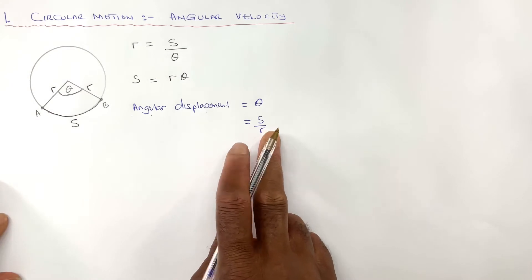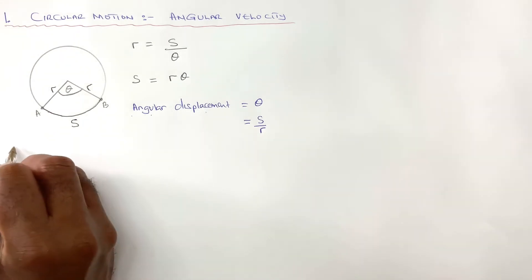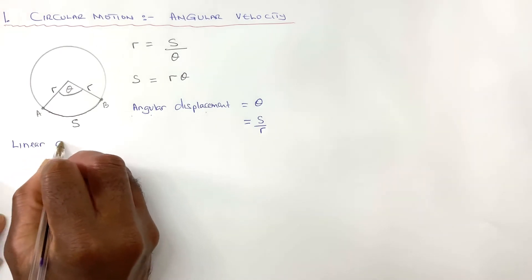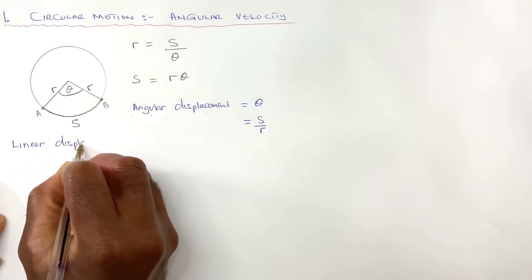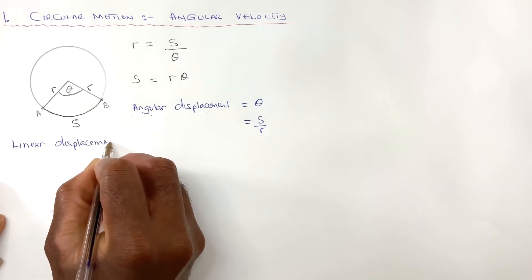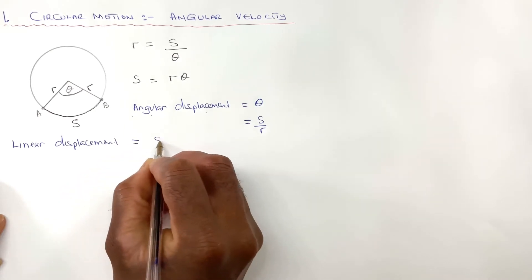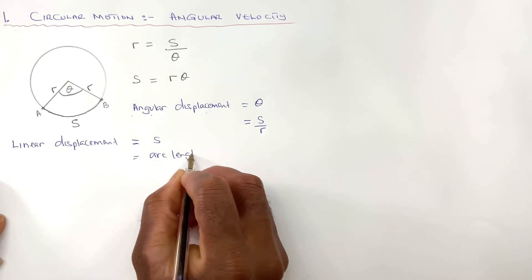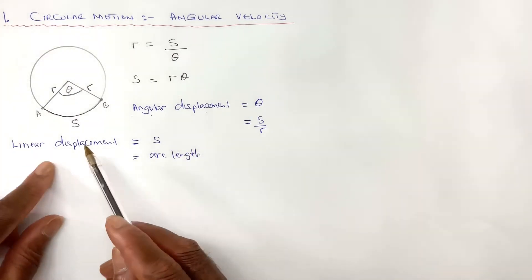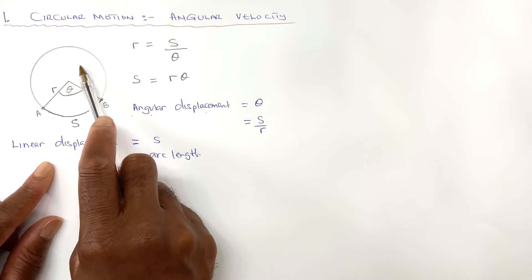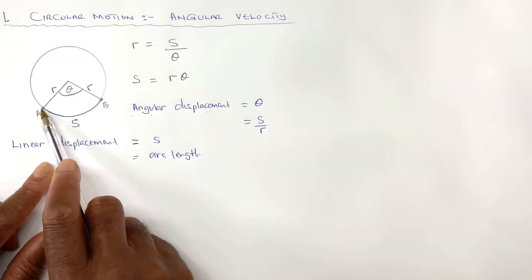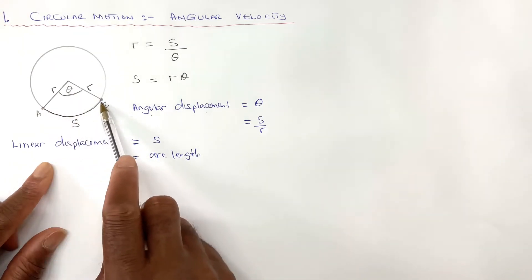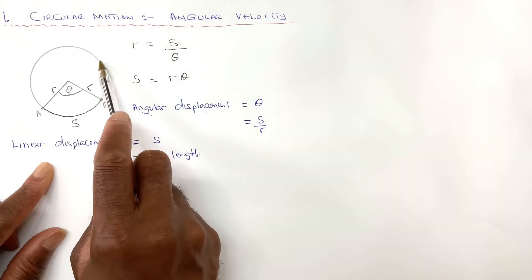That's the angular displacement. The linear displacement is going to be S, and S is the arc length. You know this is minor sector and that's the major sector. This is the minor arc. From A to B is minor arc, and A the other way around is major arc.